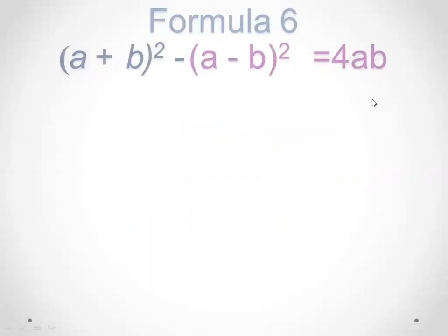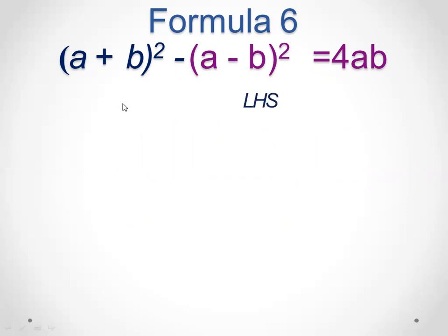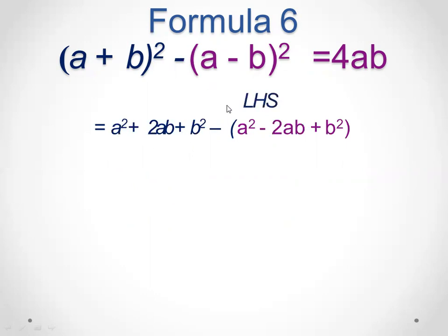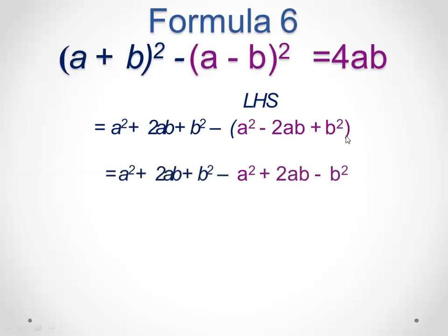Now the sixth formula: a plus b whole square minus a minus b whole square equals 4ab. Beginning with the left hand side, a plus b whole square is expanded, and because of the minus sign we put the second bracket. Opening the second bracket: a minus b whole square equals a square minus 2ab plus b square.